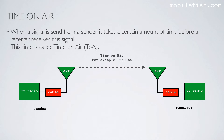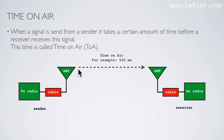When a signal is sent from a sender, it takes a certain amount of time before a receiver receives this signal. This time is called time on air. Here is the sender, and here is the receiver — the sender with a transmission radio and antenna, and the receiver with the receiver radio and antenna. In this example, it takes 530 milliseconds to travel from this antenna to this antenna, so the 530 milliseconds is the time on air.